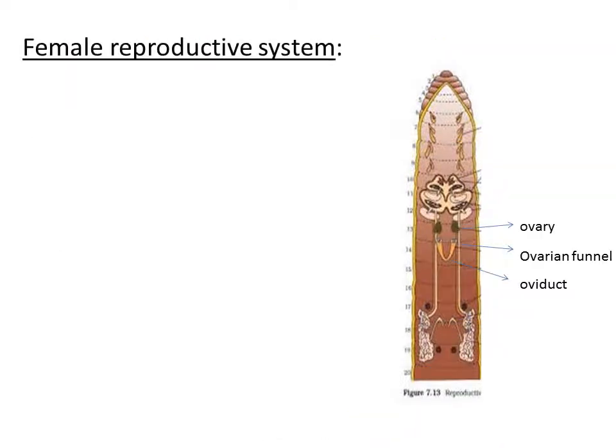Now let us study about the female reproductive system. The female reproductive system consists of only a few organs. Observe the diagram — the organs present are ovary, ovarian funnel, and oviduct. Let us study each one by one.